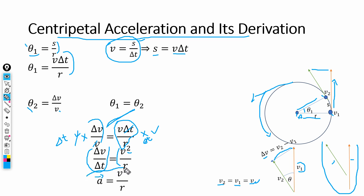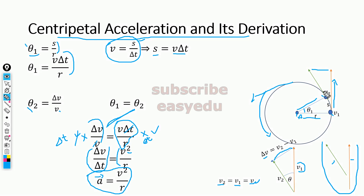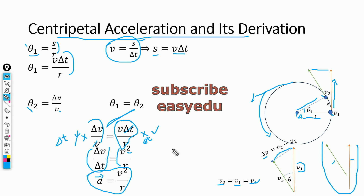This is the value of centripetal acceleration, which equals velocity squared divided by the radius of the circular path. This centripetal acceleration is caused by the centripetal force. When the object moves along the circular path, the direction of velocity constantly changes due to this centripetal force. Thank you for watching, and do not forget to subscribe for more videos.